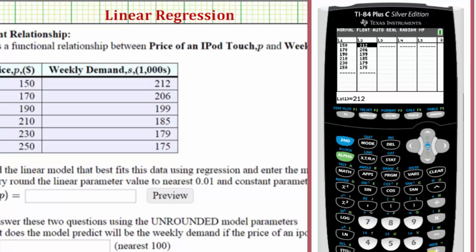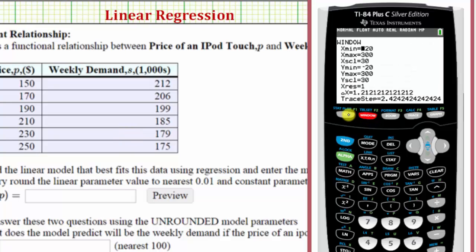Before we perform the regression, let's look at the scatterplot of the data. We first need to adjust the window to make sure all values will appear on the coordinate plane. Pressing the window key, I've already adjusted the horizontal axis to go from negative twenty to three hundred, which accommodates all of the prices, and the vertical axis to go from negative twenty to three hundred, which accommodates all of the demands.